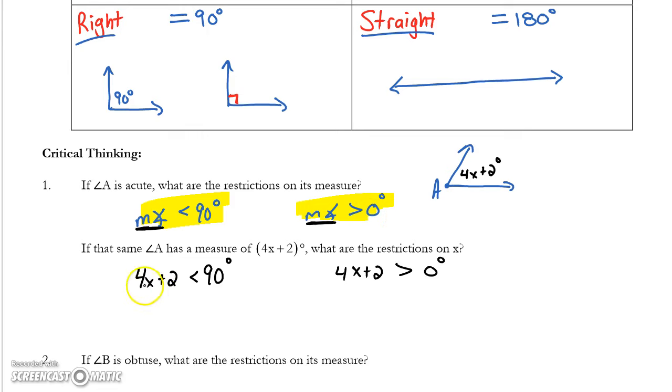I have to remember my algebra of solving inequalities. The process is the same as solving equations. If I want to get x by itself, I'll subtract 2 from both sides. That leaves 4x less than 88. Divide both sides by 4, and I'm going to write my solution over here. x must be less than 22.